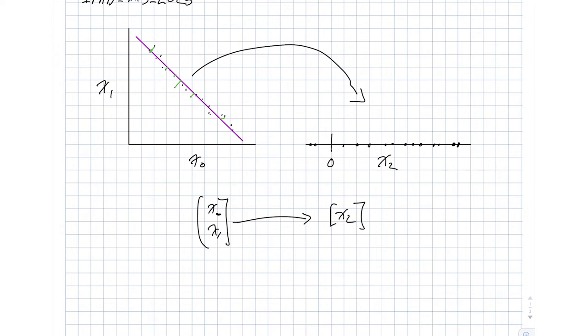So we've gone from x0, x1 to a description that is just x2. Now this is a trivial example in that we're only going from two dimensions to one dimension, but it certainly is a lot easier to draw.